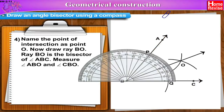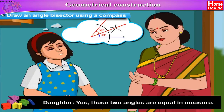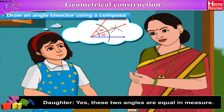Measure angle ABO and angle CBO. Are they of equal measure? Yes, these two angles are equal in measure.